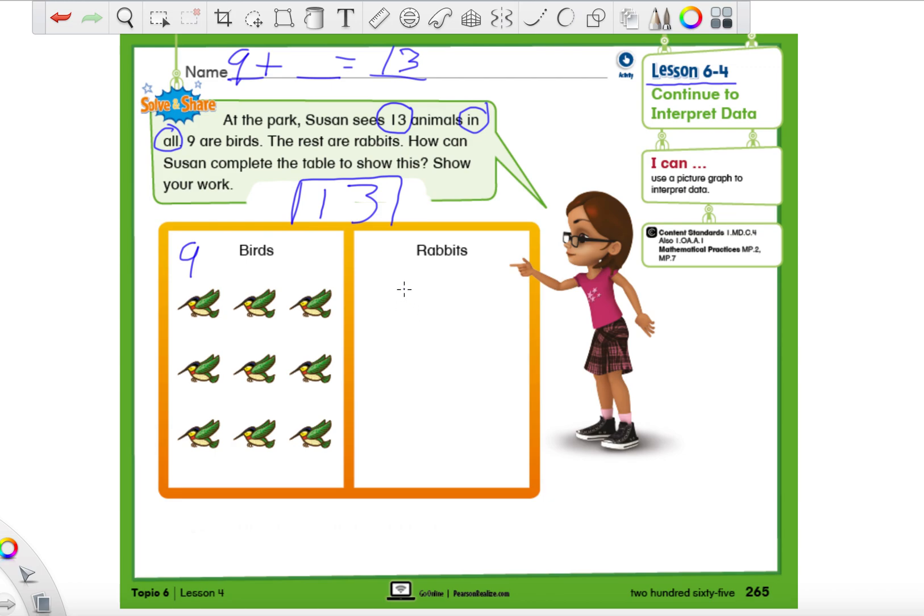Or we could count on from 9 because we know we have 9 birds. We can count on and draw until we reach 13. Now, I'm not going to do an amazing drawing. If you're going to do this method, just make a very simple shape. And you can add little details later. So, for the rabbits, I'm just going to make, like, an oval. So, we're starting from 9. One more is 10, 11, 12, 13. Now, I counted all the way up to 13. So, I stopped. And then, of course, you can make little bunny ears or something after that to show that these are rabbits.